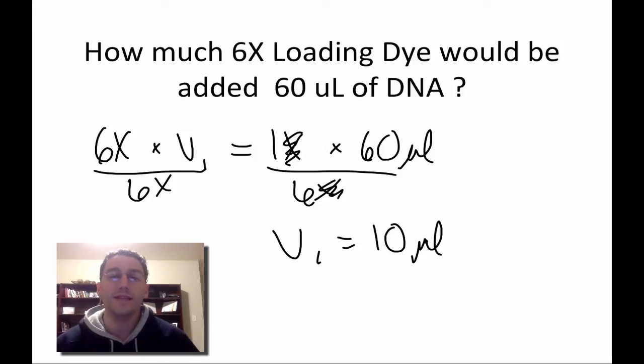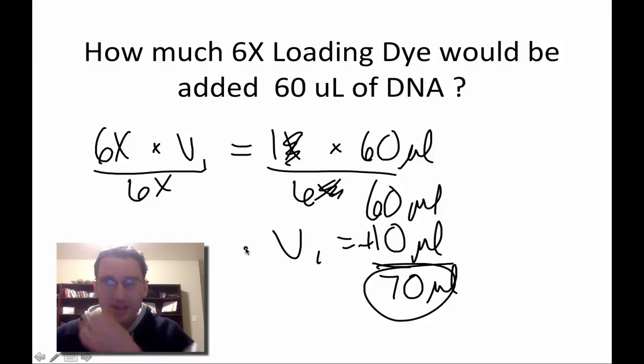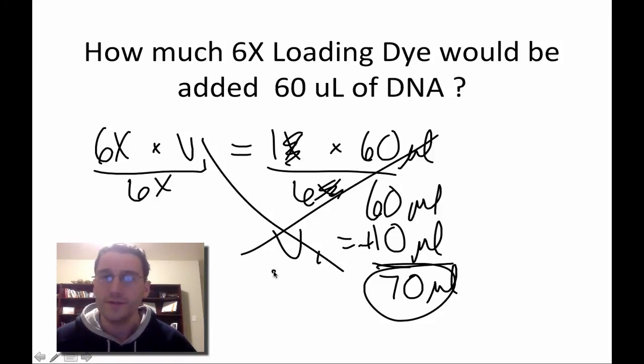But the problem here is with the DNA, we want to use all 60 microliters. So if we were to use all 60 with this, well, then we would add the 60 microliters to that, and that would give us a total of 70 microliters, which is kind of messed up now because 70 microliters as a total volume with only 6X would actually mean we need a little more, and it gets all messed up. So this kind of gets a little too confusing with DNA.